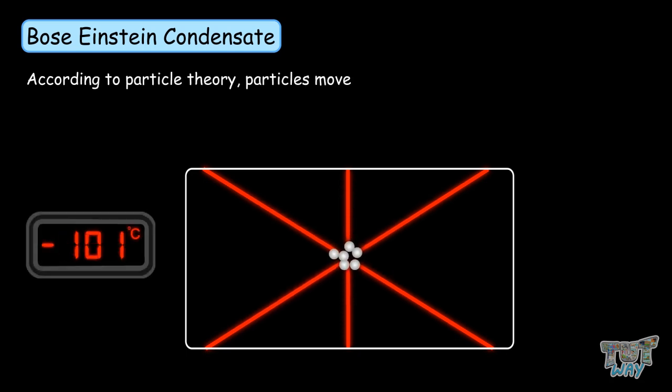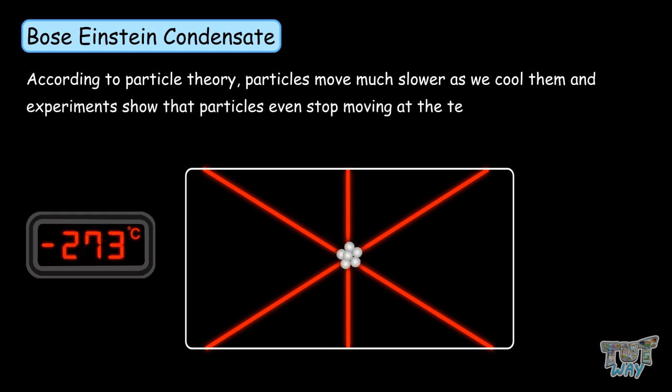Absolute zero means a temperature of negative 273 degrees Celsius. According to the particle theory, particles move much slower as we cool them, and experiments show that the particles even stop moving at temperature called absolute zero, or negative 273 degrees Celsius. This is the coldest temperature possible.